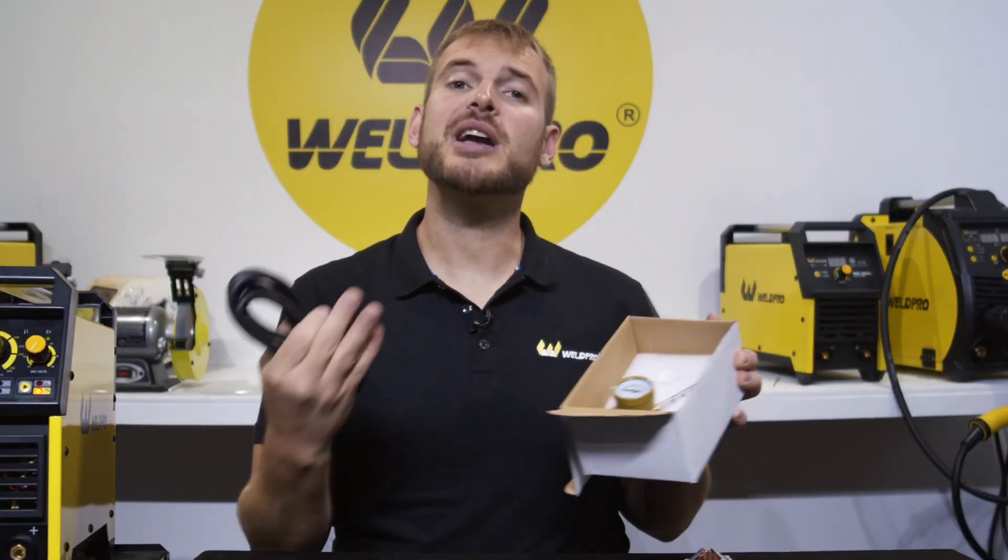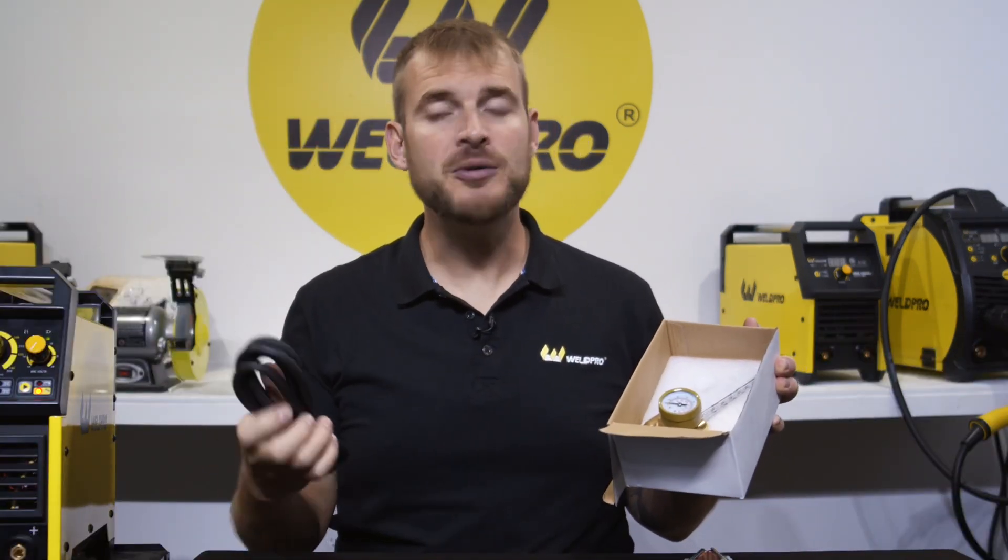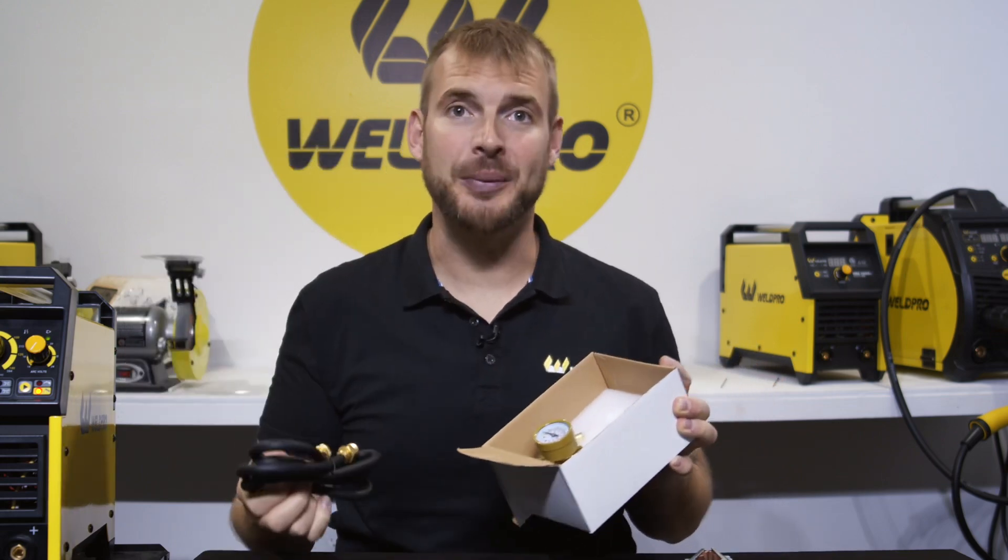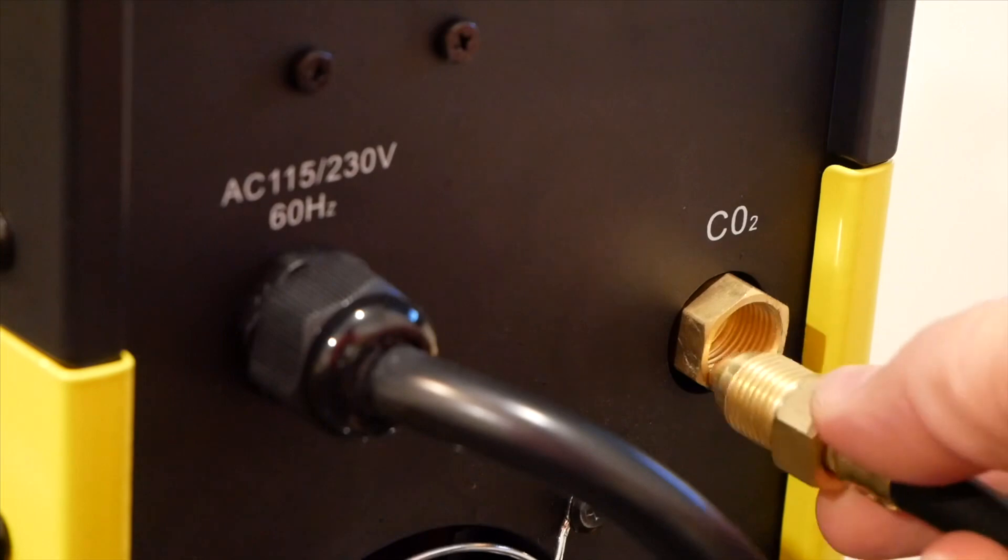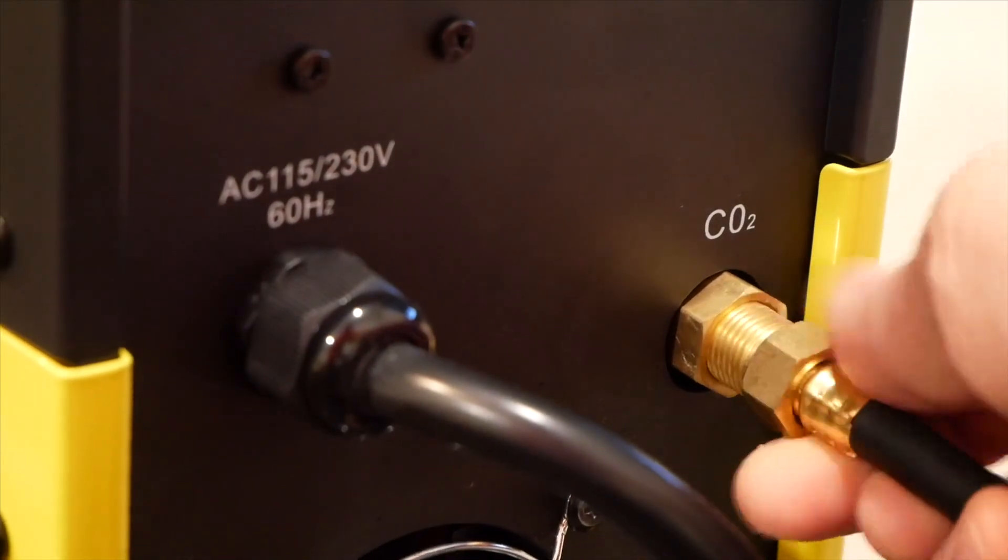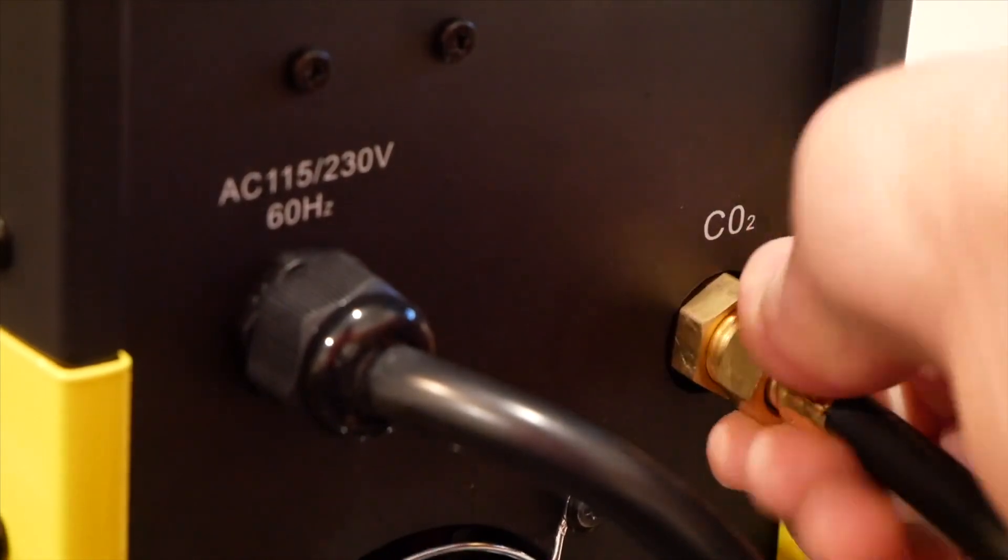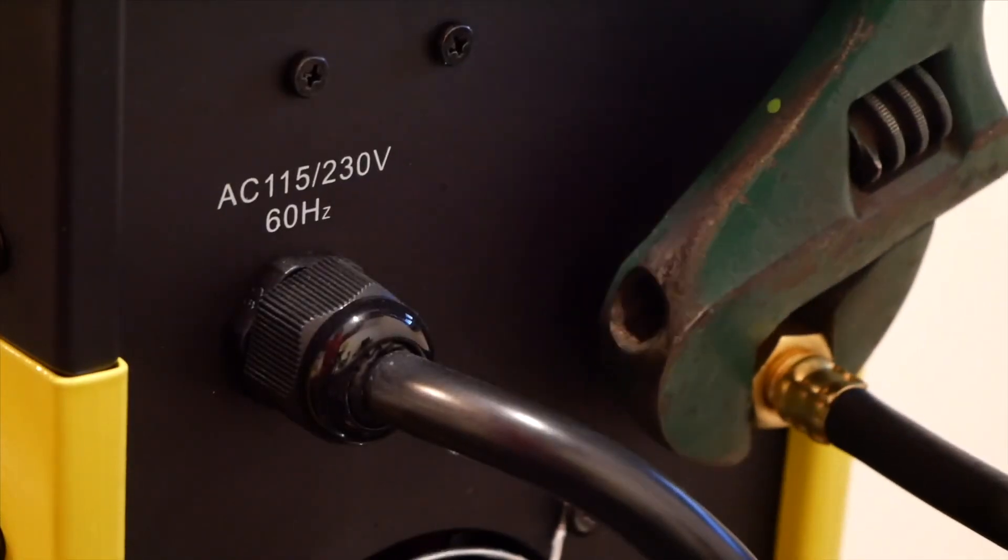Let's go ahead and get started by hooking up the flow meter to our gas bottle and this double-ended gas hose to the back of the machine and the flow meter. The gas hose is a ball and socket design, so it won't require any Teflon tape. Simply install the threaded connector and tighten it down with a wrench. Be sure not to over tighten.